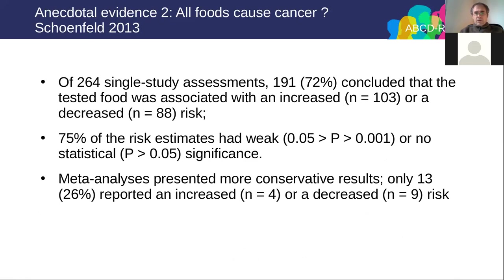Another example: out of 264 single-study assessments trying to find which foods cause cancer, 72 percent concluded the tested food was associated with an increased or decreased risk of cancer, but most risk estimates had weak or no statistical significance. Meta-analyses presented more conservative results — only about 13 percent reported an increase or decrease. This again shows that individual studies will find things, but across studies we may not replicate results.